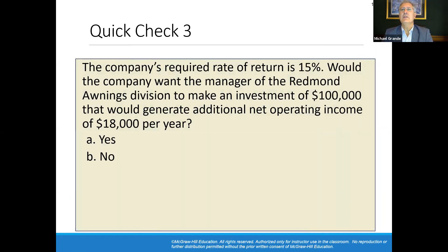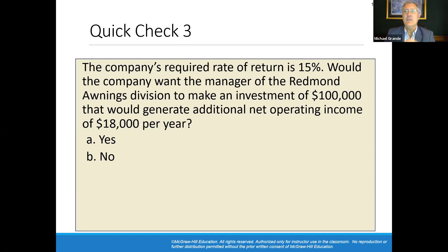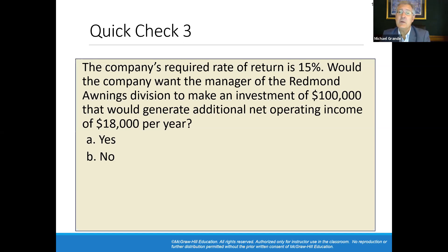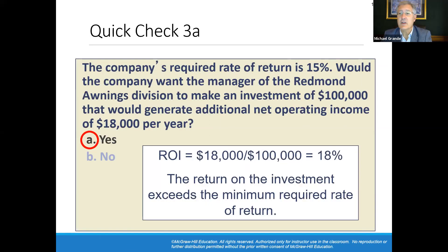But the company's required rate of return is only 15%. Would the company want the manager to make an investment of $100,000 generating additional net operating income of $18,000 per year? From the company's perspective, this investment generates 18%, which is in excess of the required 15% rate of return. So the answer is yes — there's a conflict between what the manager wants and what the company wants.